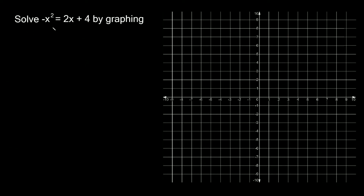This one says solve negative x squared equals 2x plus 4 by graphing. We want to get this into standard form. We can add x squared to both sides — those cancel out — and on the right side we now have positive x squared plus 2x plus 4. So y equals x squared plus 2x plus 4. The parabola is going to open upward because there's a positive 1, and it's going to hit the y-axis at positive 4.